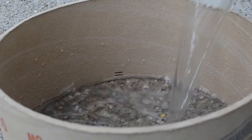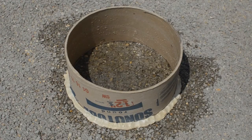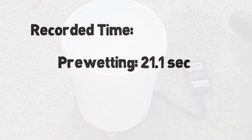Begin timing as soon as the water hits the pervious surface. When water is no longer present on the surface, record the elapsed time of the pre-wetting. The time elapsed determines the amount of water to be used in the actual test.